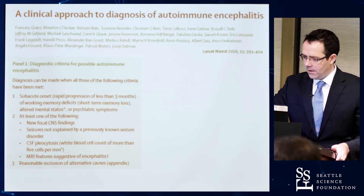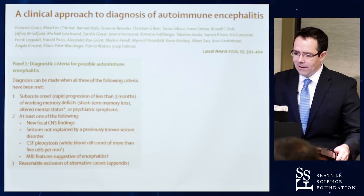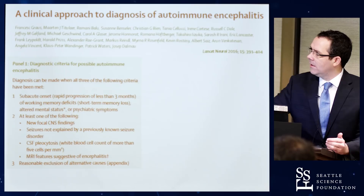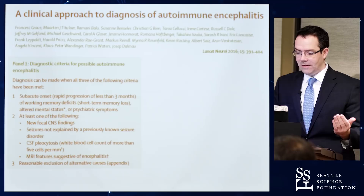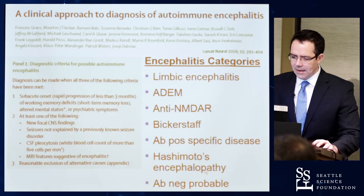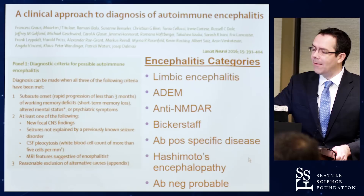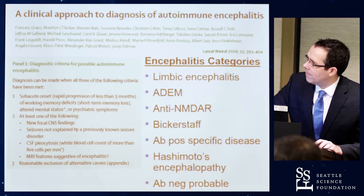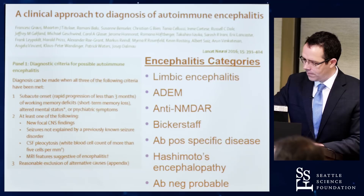A nice article published in The Lancet Neurology by Grouse and colleagues from the Dalmau group was an international consortium for the diagnostic criteria for autoimmune encephalitis. The typical patients have a subacute onset of mental status changes, psychiatric difficulties, and memory problems, usually with focal CNS findings or seizures, inflammatory spinal fluid, or MRI changes. The article categorized encephalitis types into limbic encephalitis, ADEM, anti-NMDA receptor, Bickerstaff's encephalitis, antibody-positive specific disease, Hashimoto's encephalopathy, and antibody-negative probable autoimmune encephalitis.